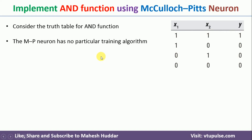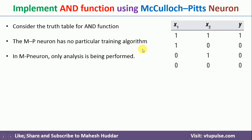We need to remember one important thing: the MP Neuron does not have any training algorithm. We need to do some analysis and then identify the optimal weights as well as the threshold value such that the neuron fires only when both inputs are high — that is, when x1 equals 1 and x2 equals 1. In all remaining cases, it should not fire.